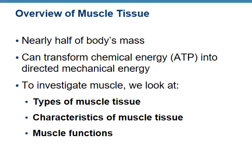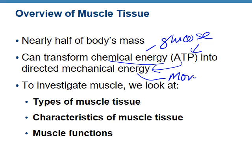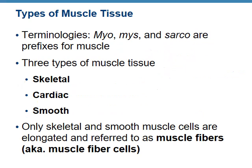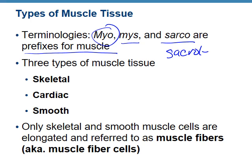Let's start with an overview of muscle tissue. Nearly half of the body's mass is made up of muscle. We can use muscle to transform chemical energy found in glucose into ATP, and then use that ATP to direct mechanical energy, or movement. Some terminologies to look for: anything that says myo, mys, or sarco — these are all prefixes for muscle. So if you see sarcolemma, you know it has something to do with muscle.